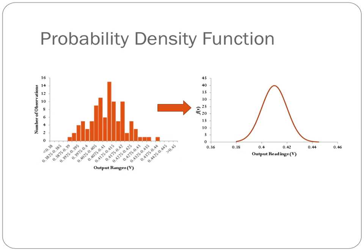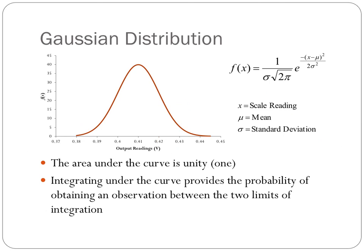As the bin size gets smaller and smaller and we approach a continuous function, we see that due to the random uncertainty in our measurements with the load cell, this approaches and starts to look like a bell curve. The proper name for the bell curve is the Gaussian probability density function, and its formula is given here. We're going to define the parameters of the mean and standard deviation in just a moment.